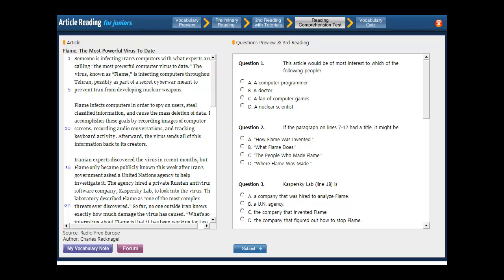Hi, this is Neil. Welcome to article reading for juniors. Today, we'll look at this article about the flame virus, which has been used to infiltrate Iranian computers and potentially stop their nuclear system from developing any further than it already has.